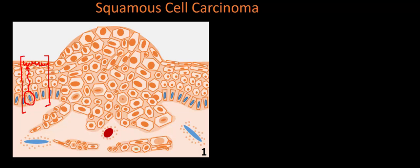The first feature: notice how the keratinocytes are all different shapes and sizes — some big, some small — and their nuclei are also all different sizes and shapes. This cellular irregularity and variation in the size of nuclei is referred to broadly as pleomorphism, and it is one hallmark feature of squamous cell carcinoma.